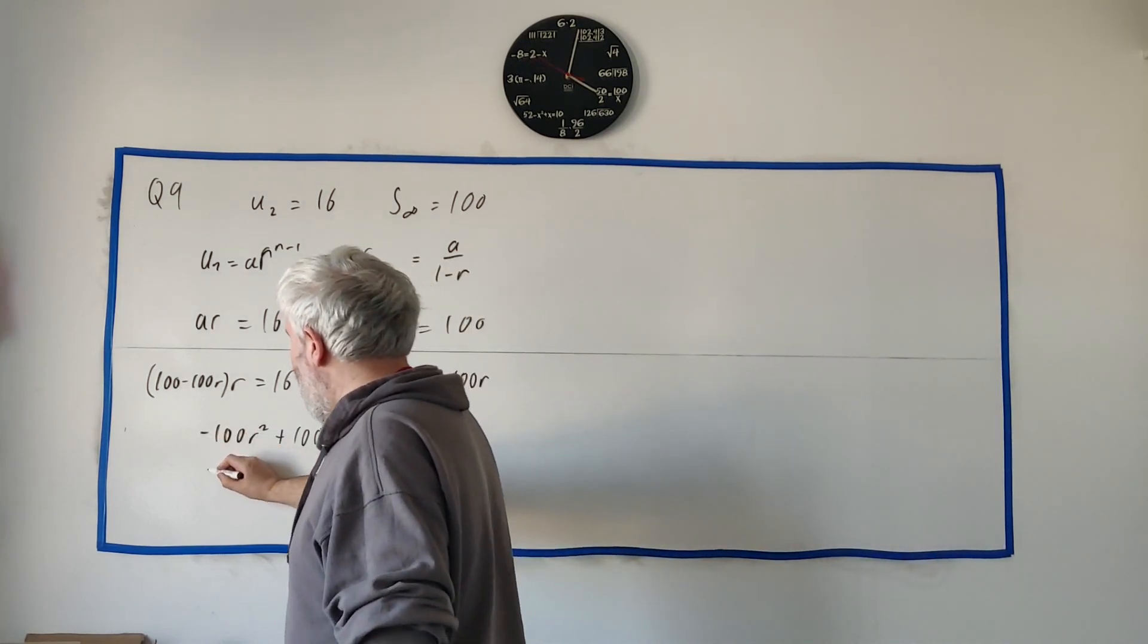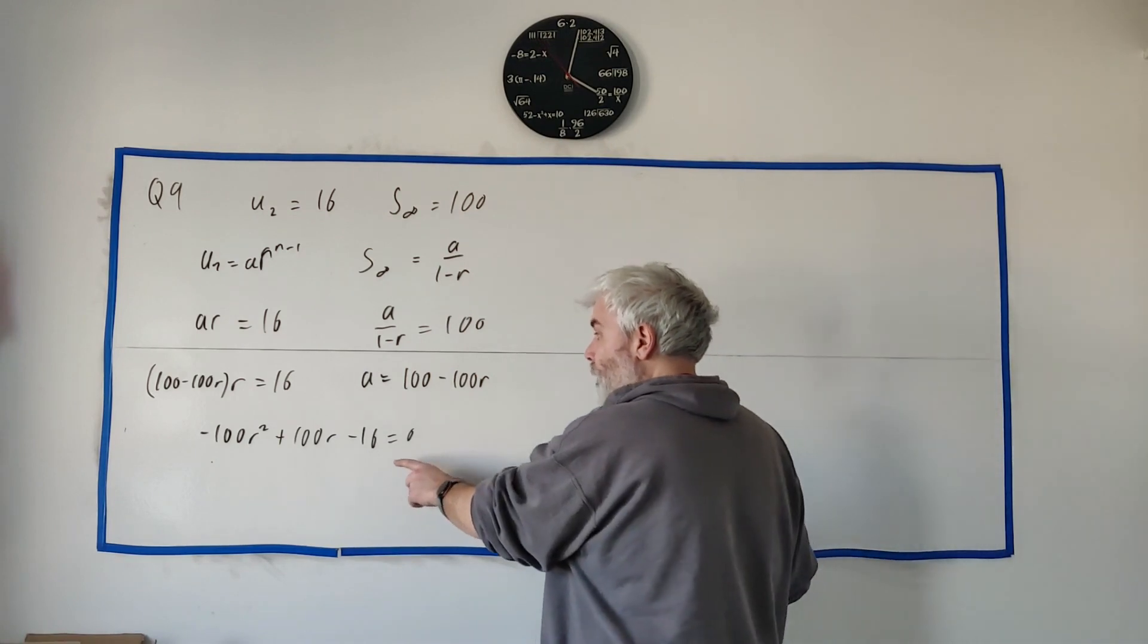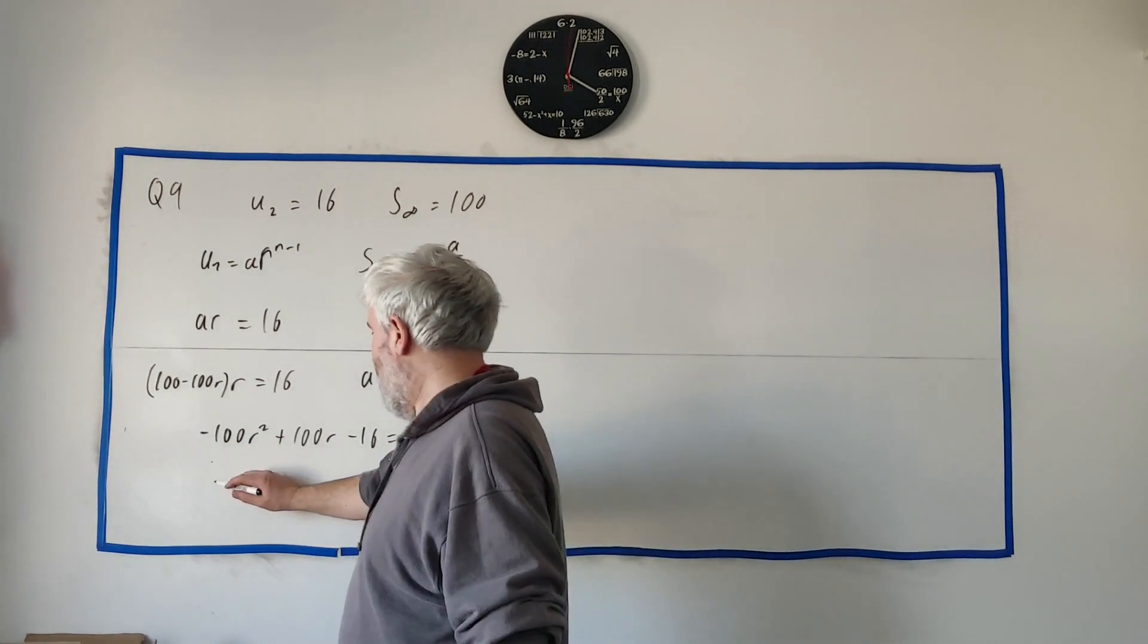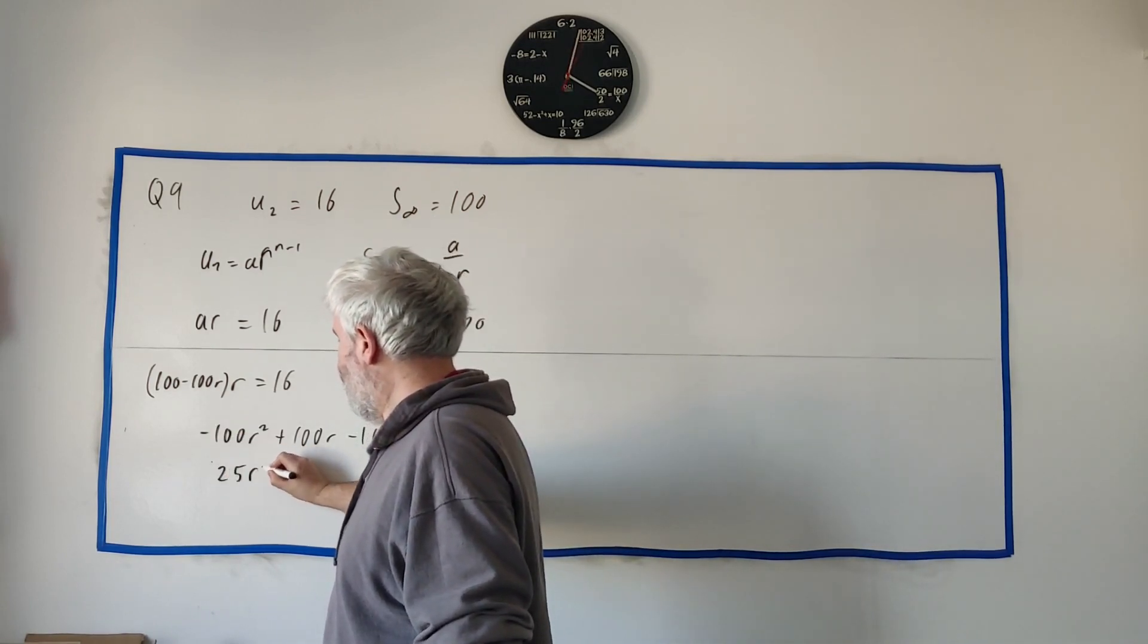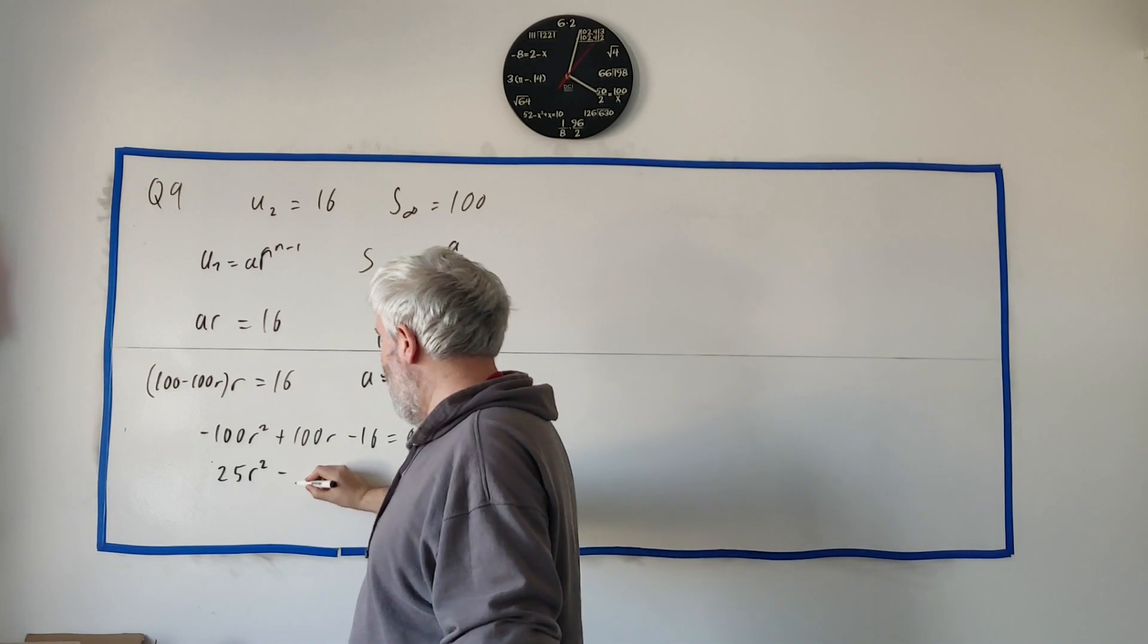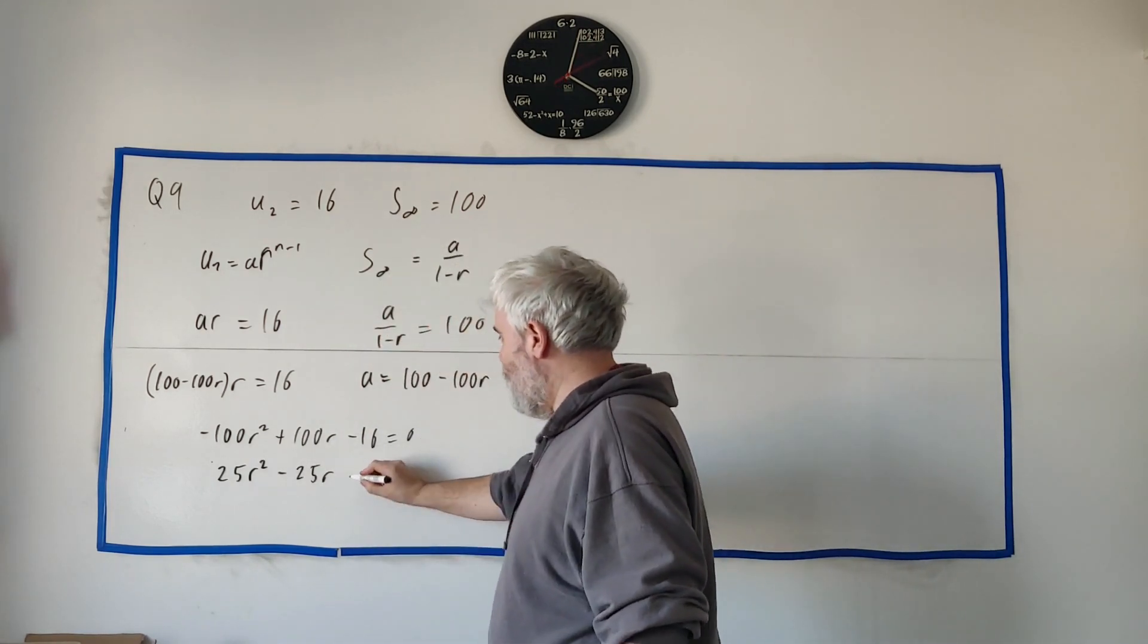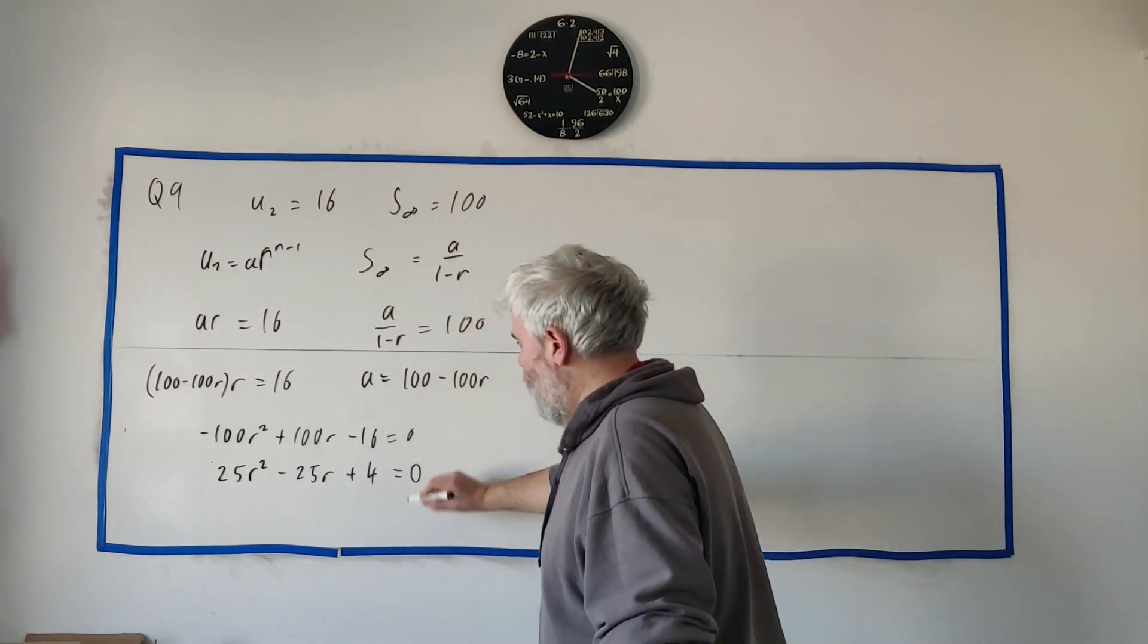Let's go ahead and change all these signs. Actually, while we're at it, let's divide everybody by 4. I think it's the biggest number that goes into all of them. Divide everybody by 4, minus 4, in fact, to get plus 25. Divide that by minus, we get minus 25. Divide that by minus 4, we get plus 4. Divide 0 by anything, we get 0.